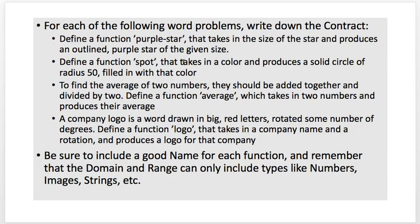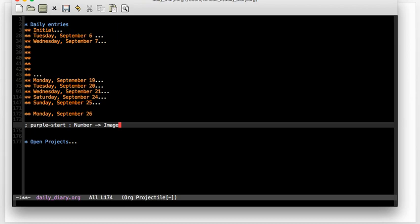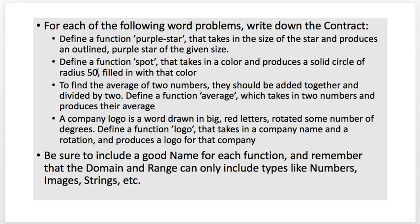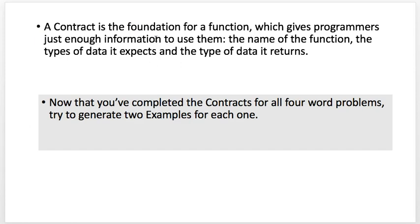So there's the contract. Pause now and in your notebook write the contract for the next three functions. A contract is the foundation for a function — it gives the programmer just enough information to use it: the name of the function, the type of data it expects, and the type of data it returns. Now that we've completed the contracts for all four word problems, try to generate two examples for each one.